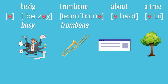In Dutch, the tongue position is somewhere in between that of English A and English I. So if you're trying to say the word trombone in Dutch, you can start with an A sound — trombone — and then let your tongue drift up a little bit in the direction of I: trombone, trombone.